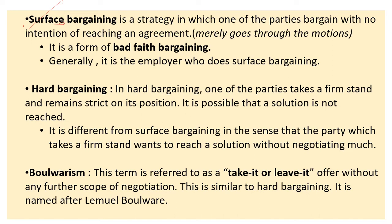There are other types of bargaining. Surface bargaining is a strategy in which one party bargains with no intention of reaching an agreement — it can be done by the employer or the employee. It is a form of bad faith bargaining. If an employer believes that not reaching an agreement serves his purpose better, he will not agree — he will show that he wants to agree, but he will not.